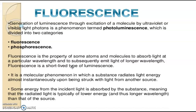When an electron present in the ground state is subjected to incident light with energy E equal to hν, that electron absorbs the energy from the incident radiation and gets excited to the higher energy state. But in the higher energy state, it is highly unstable. So it comes back to the original ground state by emitting the absorbed radiation. The time period taken by fluorescence is less when compared to phosphorescence.